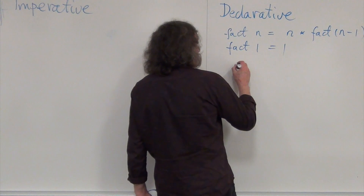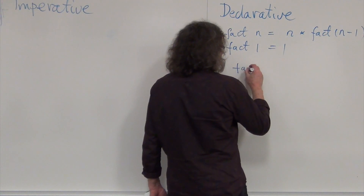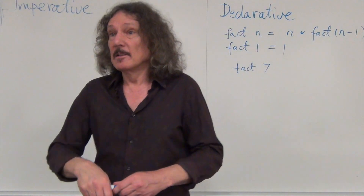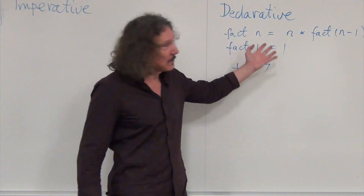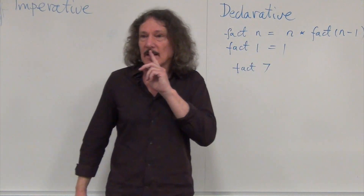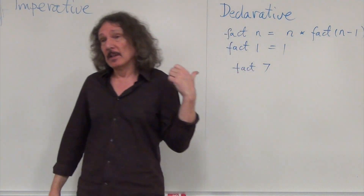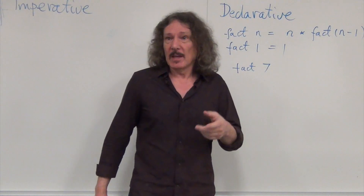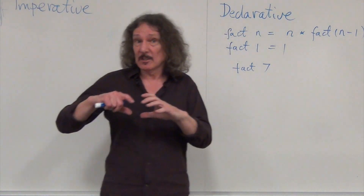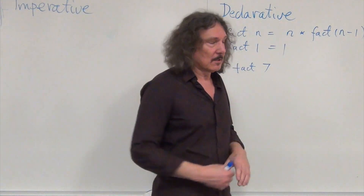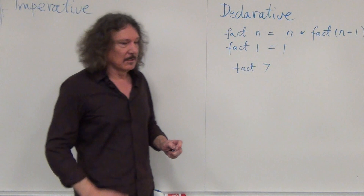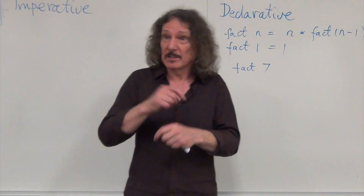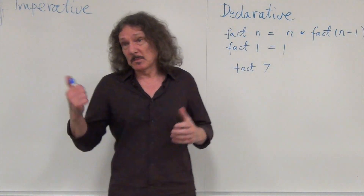That's more like a mathematical definition — it just declares what it is. And then once you declare it, you can say give me a factorial of 7, and the compiler figures out how to calculate this. You might say if I write a loop instead and say just multiply the numbers starting from 1 to n, have some kind of accumulator in which you keep the current result, this will be more efficient because you know exactly what moves will be made from memory.